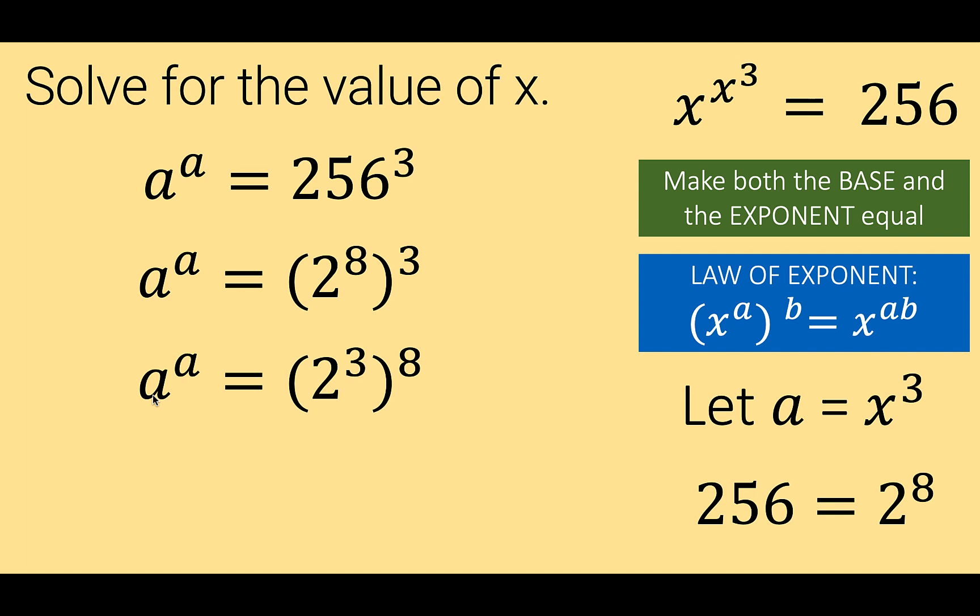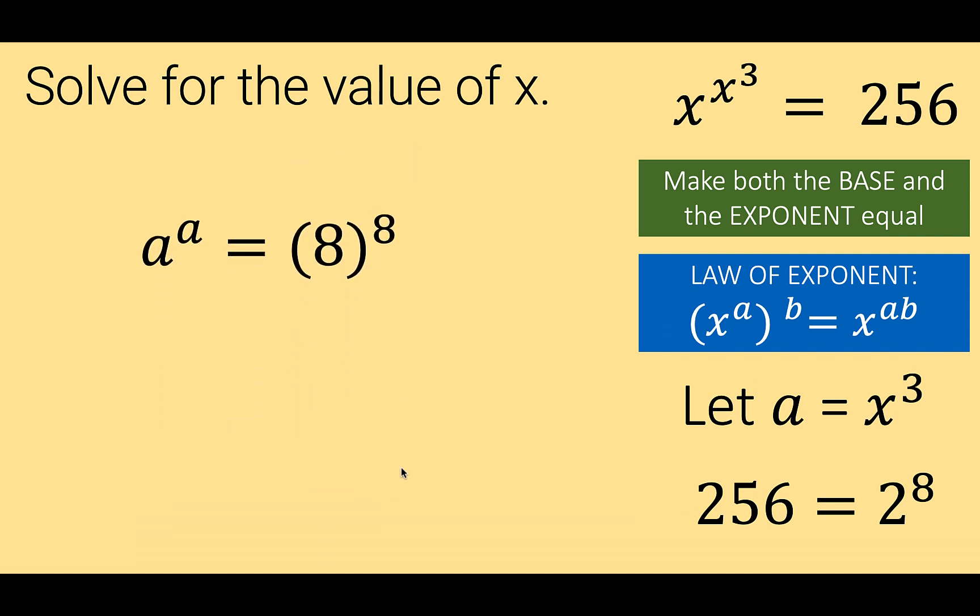In other words, we now have the base 2 to the third equal to exponent 8, because 2 to the third is equal to 8. And so we now say that a raised to a is equal to 8 raised to 8, which means that the value of a is equal to 8.